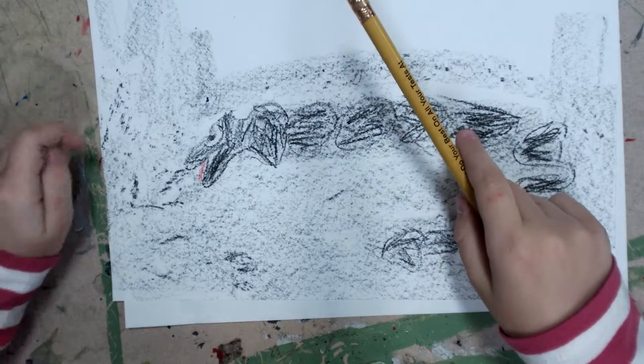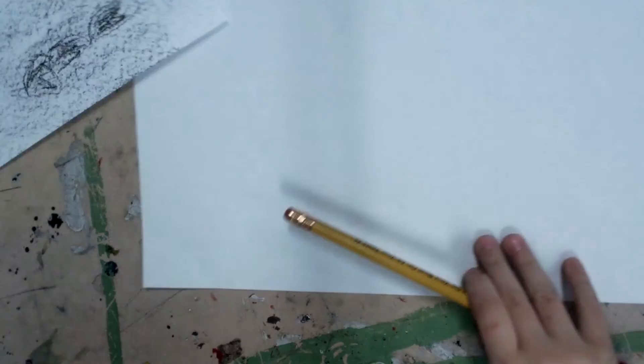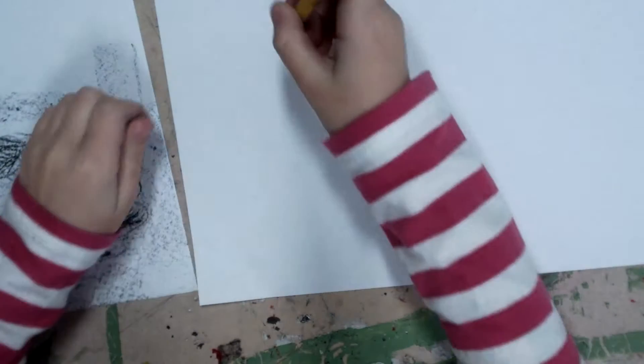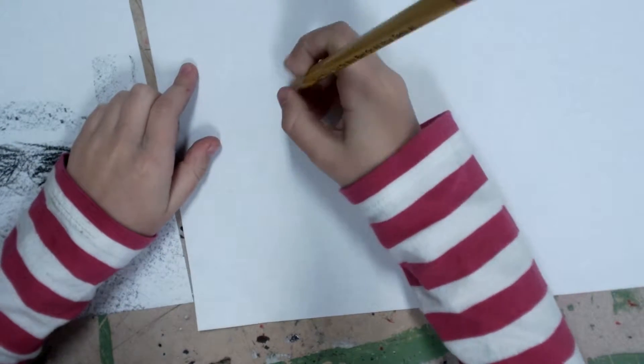Today I'm going to show you how to draw Onyx. So you start with his head, which is a big loop sideways, like a U.